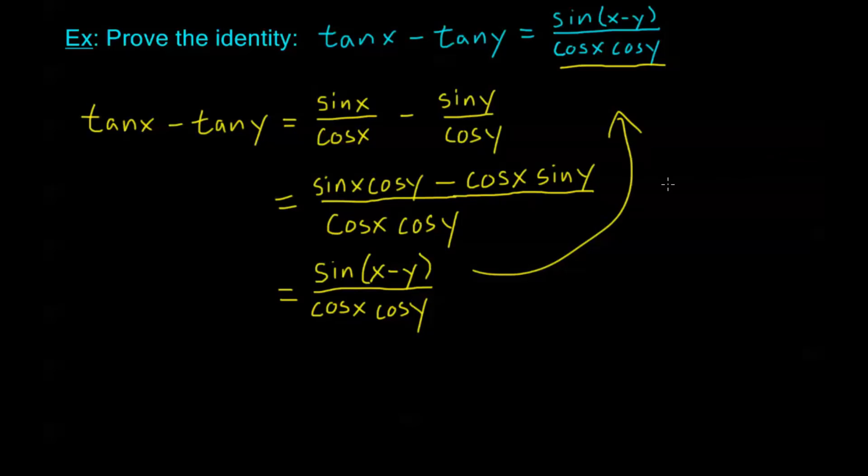You could start from the right-hand side, and it would look exactly the same here. You'd expand out with the sine subtraction formula. Then you would break this up into two different terms, because we know that our left-hand side has two terms. So then you get sine x, cosine y, over cosine x, cosine y, the cosines cancel, and you get tangent of x. And similarly, when we create a term of cosine x, sine y, over cosine x, cosine y, the cosine x's cancel, and we get sine y over cosine y, or tangent of y.